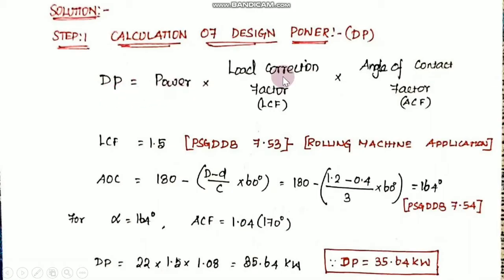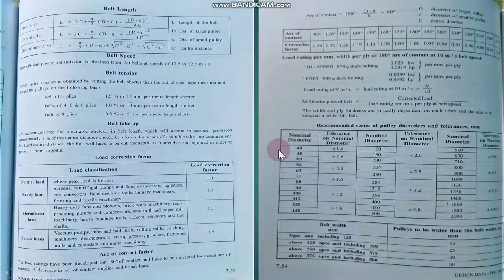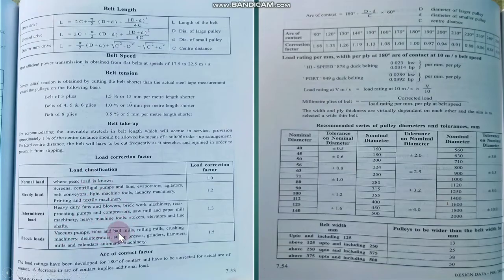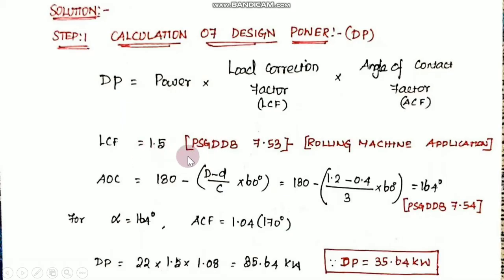Design power equals Power multiplied by load correction factor multiplied by angle of contact factor. The formula is given in the data book. The load correction factor (LCF) is 1.5. The arc of contact formula is used next.